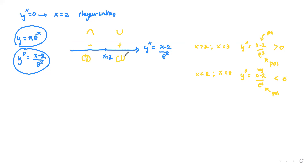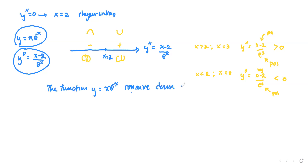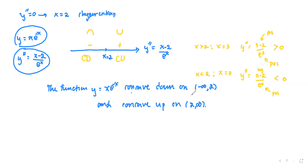To summarize: the function y equals x times e to the negative x is concave down on the interval negative infinity to two, and concave up on the interval two to positive infinity. We are done.